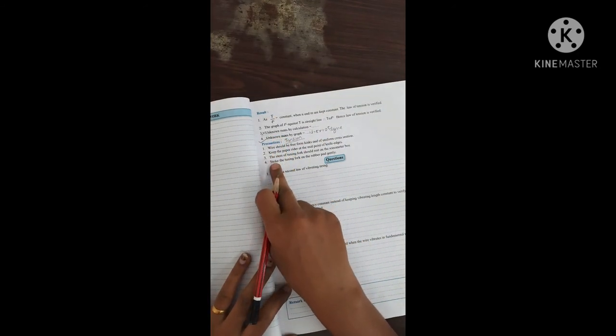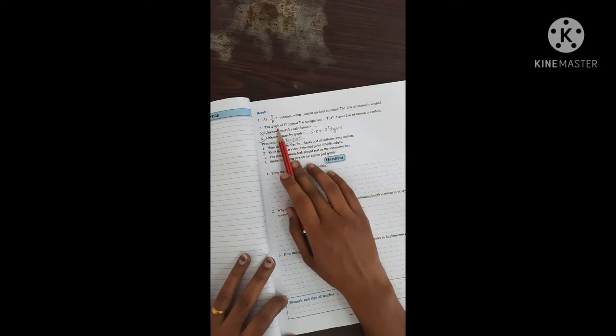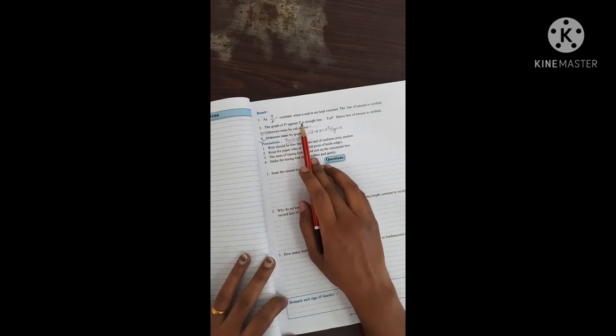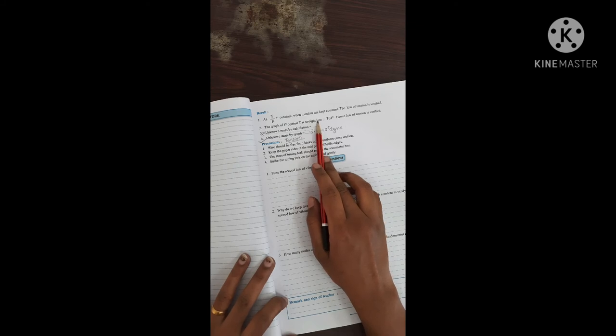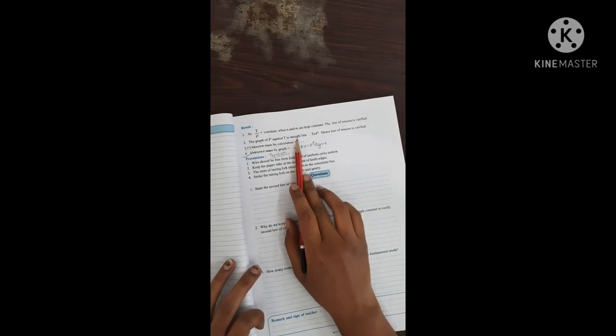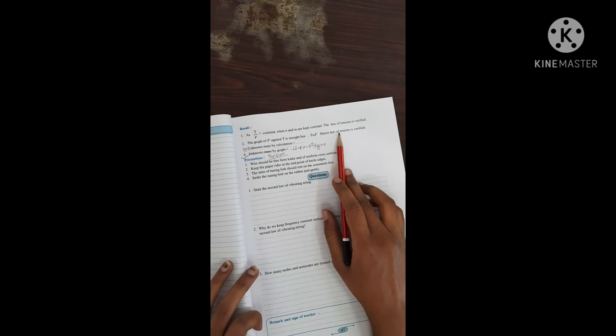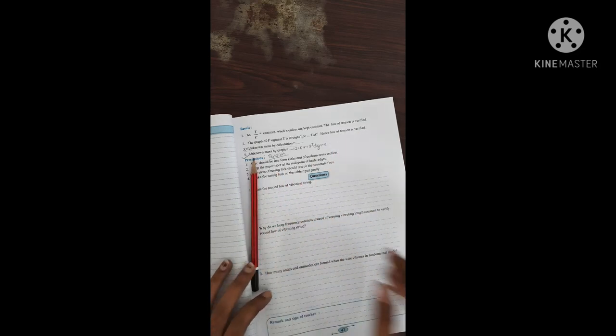Into 10 to the power 5, so this much is your answer. Then after writing the result you have to draw the precaution. Now here you can say that the graph of l square against the T is straight line, and you can say that hence the law of tension has been verified.